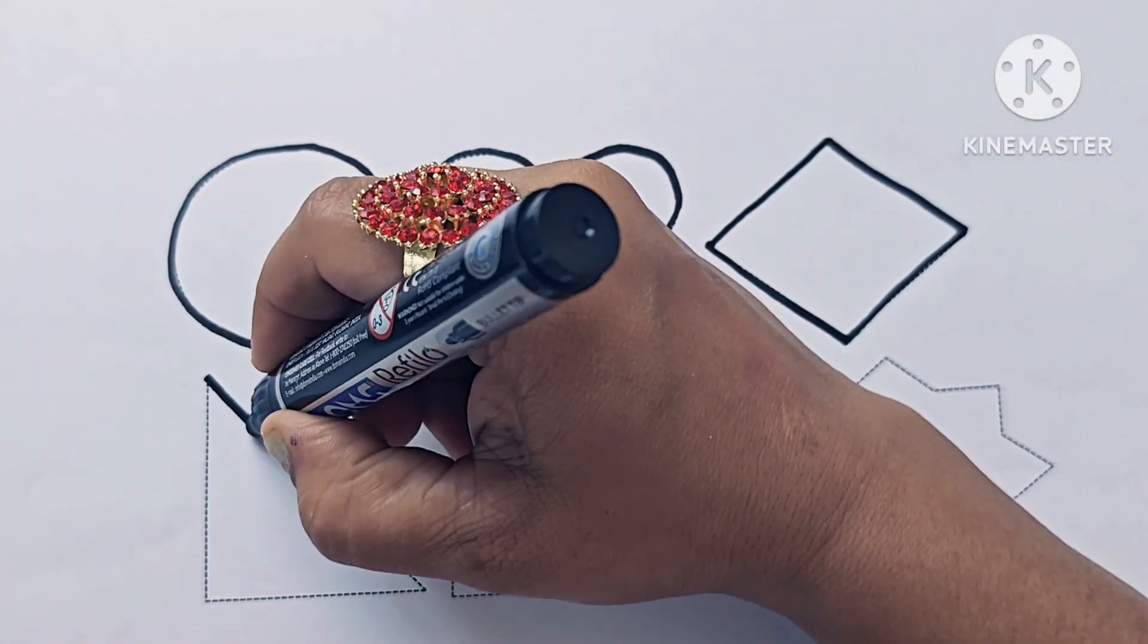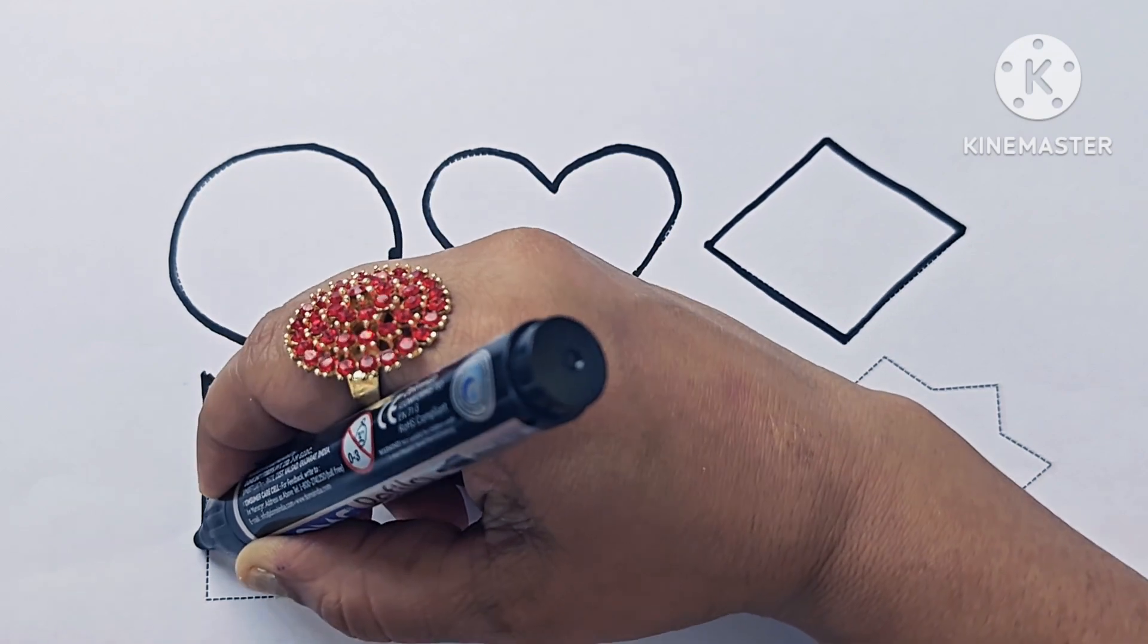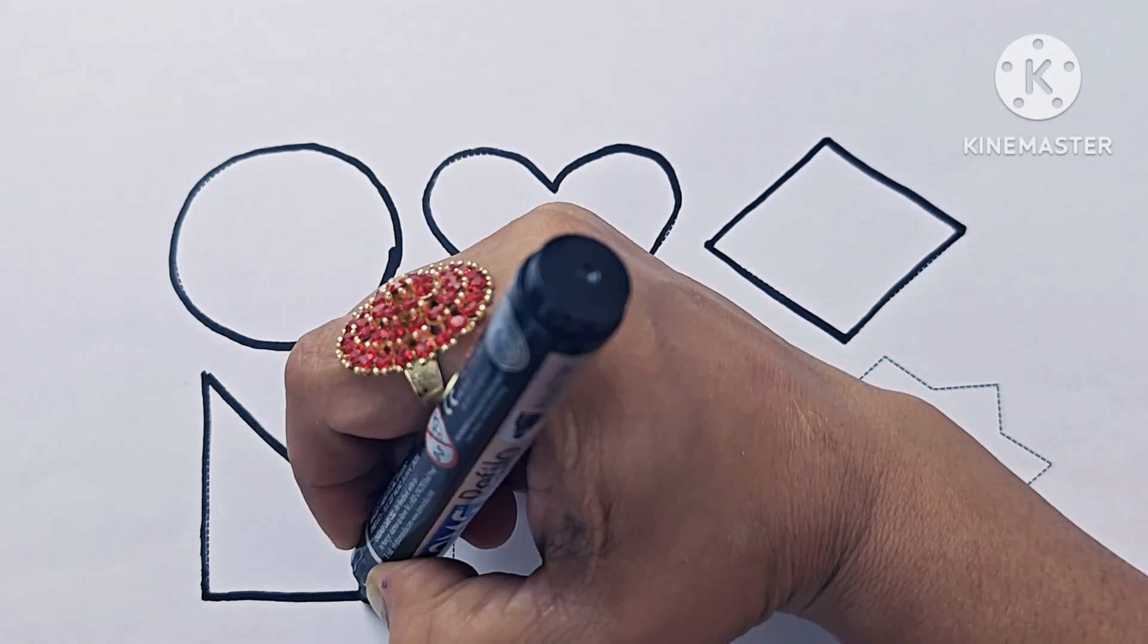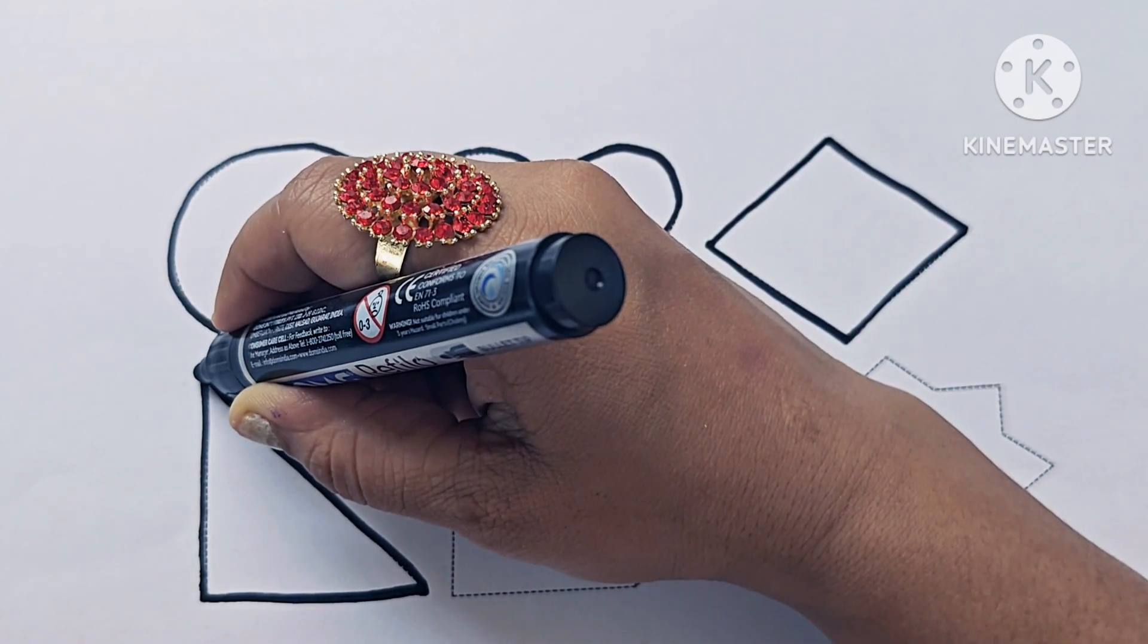This is triangle. Tri means three. It has three angles, and one angle is 90 degrees. It is called right angle triangle.